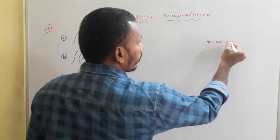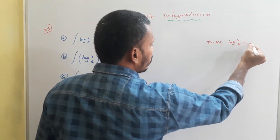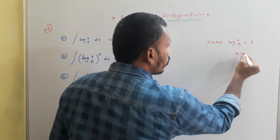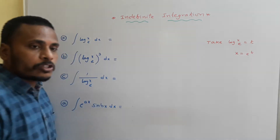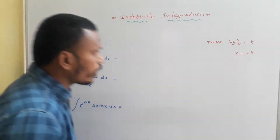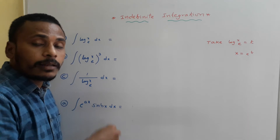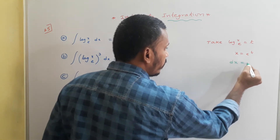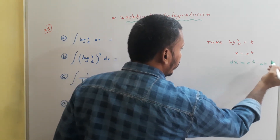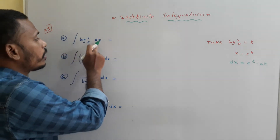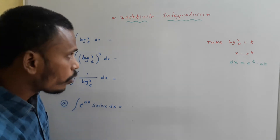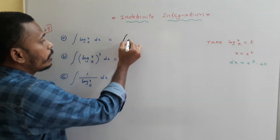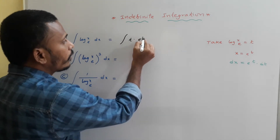Take log x (base e) = t. Since log x (base e) = t, then x = e^t (exponential form of the logarithm). Since x = e^t, I will try to convert the problem completely in terms of t from x. Then you get dx = e^t dt. So the problem integral of log x (base e) dx becomes integral of t · e^t dt.